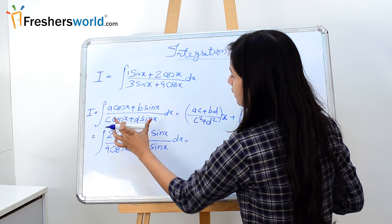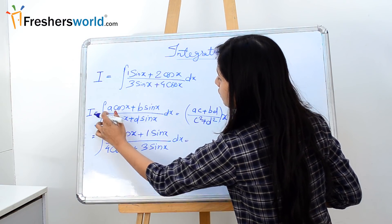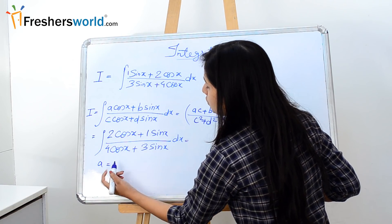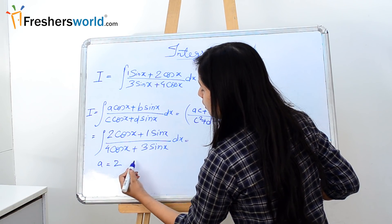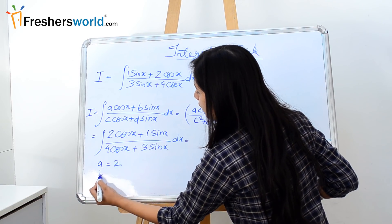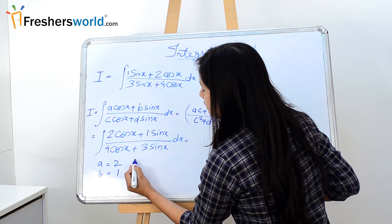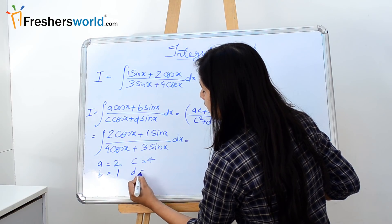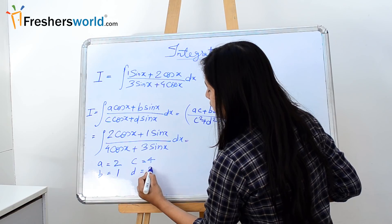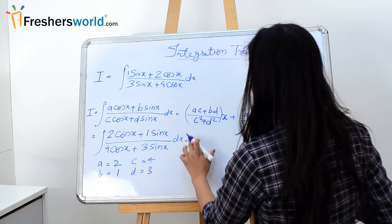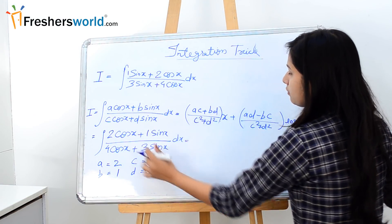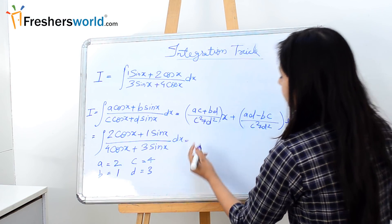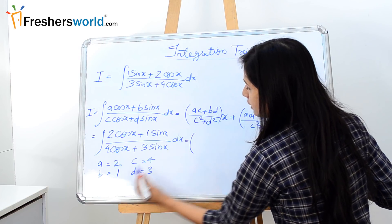Now we have rearranged our equation in this format. So here we have: a = 2, b = 1, c = 4, and d = 3. Now let's solve it using this formula.